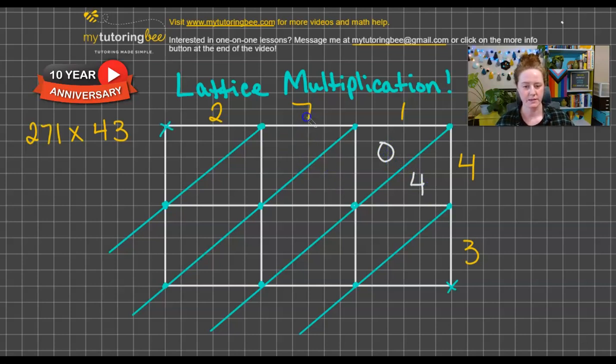Let's go on to this box here. Seven times four, that gives us 28. So since that's a two digit number, we can just put each of those digits in each of the little triangles there. Two times four, that's eight. So again, a single digit number, we're going to just go ahead and put a zero there as a placeholder and then the eight.